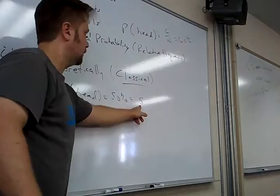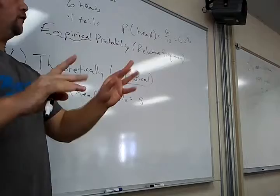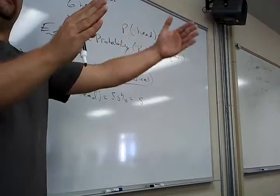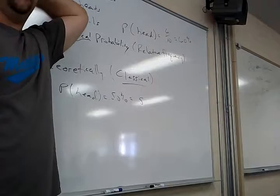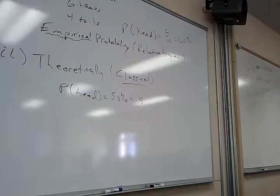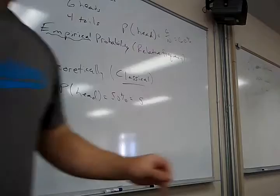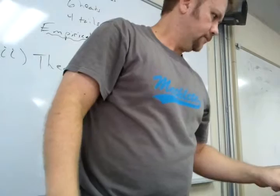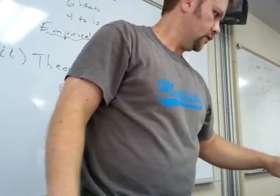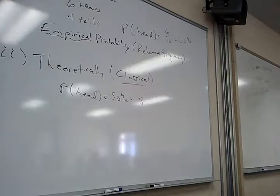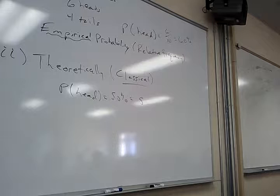The more you do this, the closer the empirical answer should get to the theoretical. If you do it a thousand times, how many heads should you get? 500, because 50% of a thousand is 500. This is the law of large numbers. It's related to the law of averages — eventually it averages out. Later in the book we'll say, how many heads would be evidence that something's been tampered with?